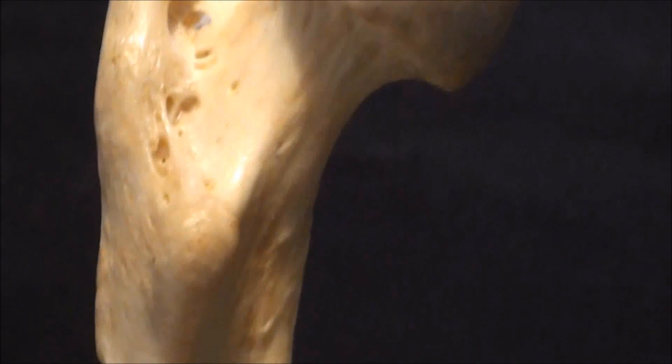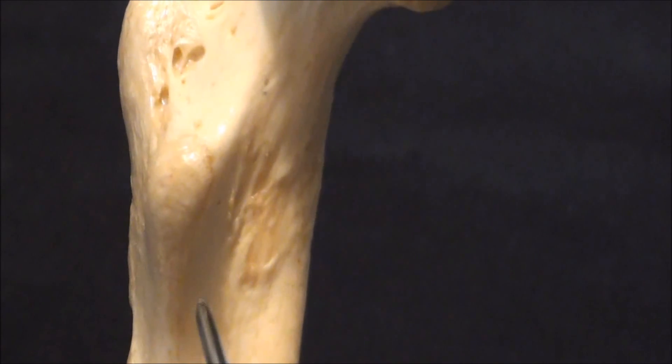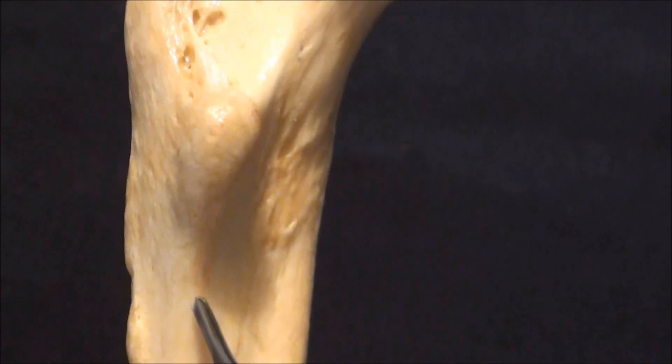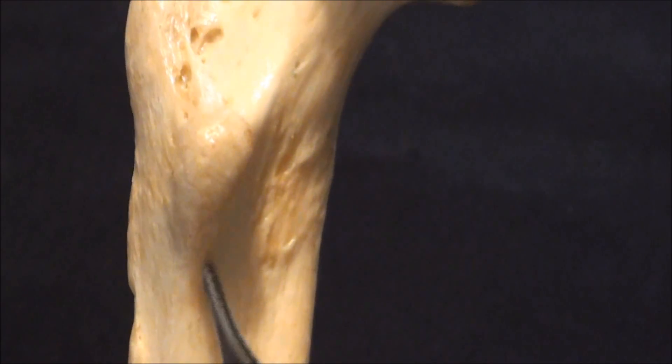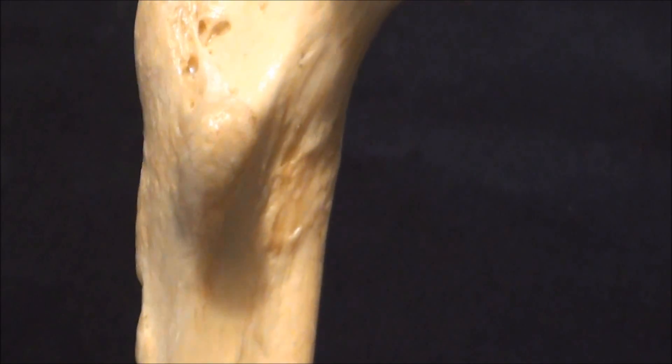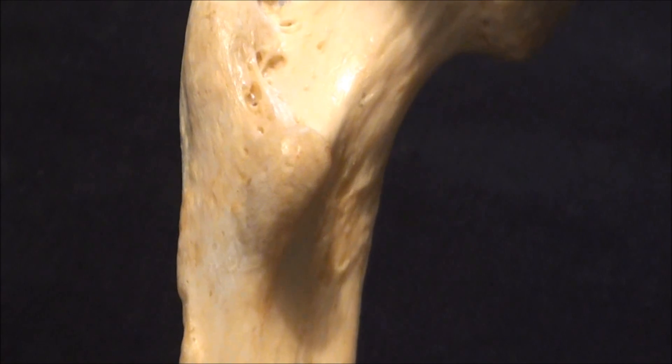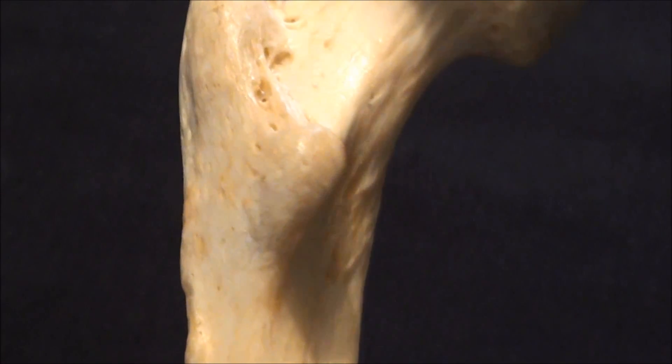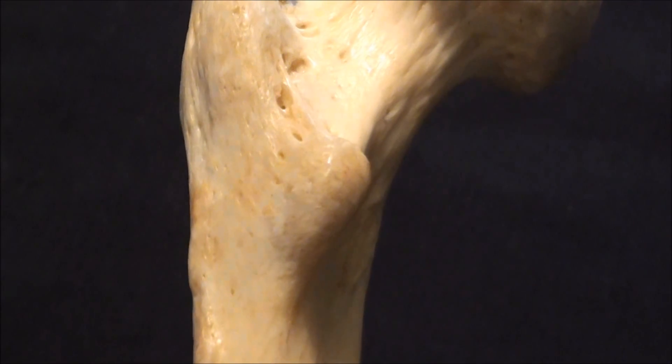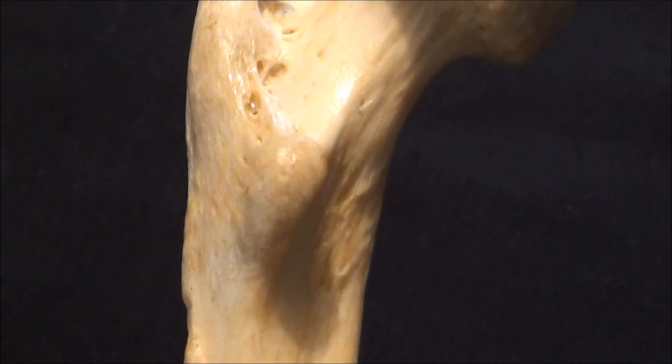Inferior to the lesser trochanter we will find additional landmark. This is the pectineal line of the femur. The pectineal line is insertion point for the muscle which is called the pectineus running between the pectin pubis down to pectineal line of the femur.